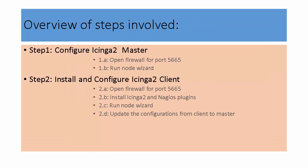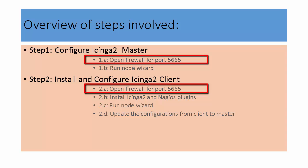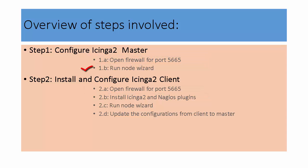In this video we will be setting up monitoring for Linux using the Icinga 2 client. We will go through different steps involved: first, open port 5665 in the firewall; then run node wizard at the master Icinga 2 server; then at the client side install Icinga and required plugins; then start node wizard at the client for client-side configuration; then update configurations between client and master.